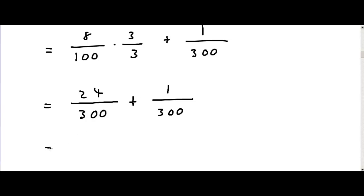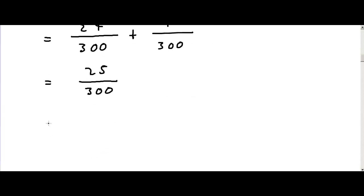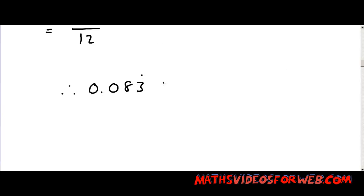And this is equal to 25 over 300, which is, in fact, 1 over 12 simplified. Therefore, 0.083 recurring is equal to 1 over 12 as a fraction.